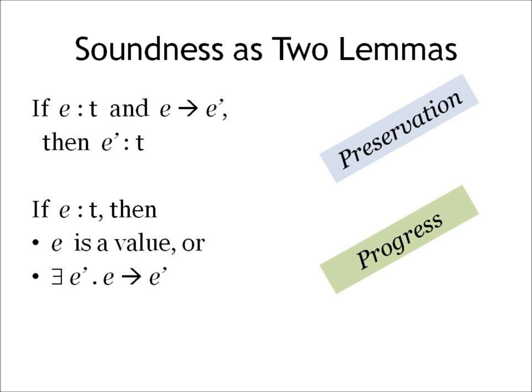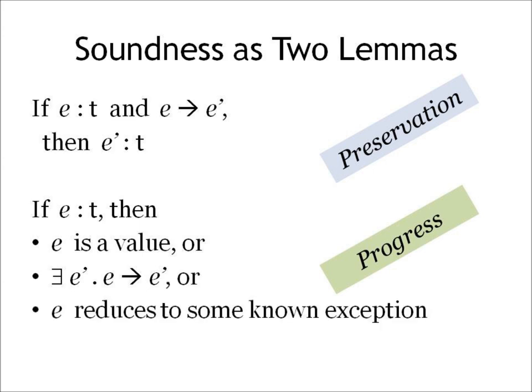The final theorem about soundness comes about through a very elegant interleaving of progress and preservation steps. But before we get there, we need to understand that something tricky can happen. We haven't told the whole story about progress. Consider a term like division by zero, which in most programming languages that have static type systems doesn't yield a value, but also doesn't yield another step of evaluation. Rather, it reduces to some kind of known exception. We'll get back to this in a moment.